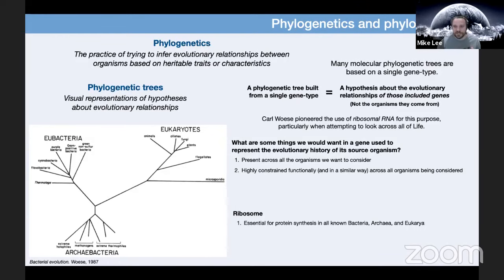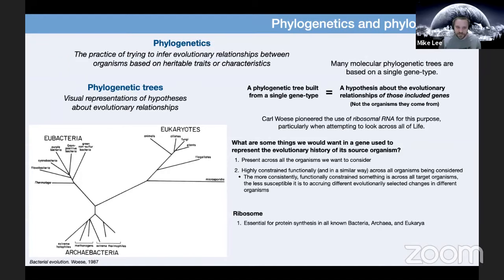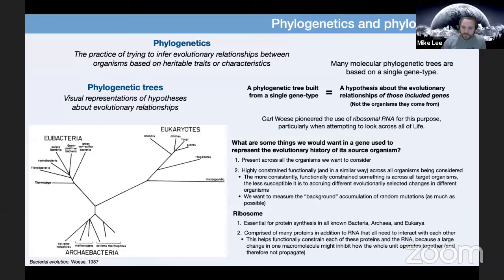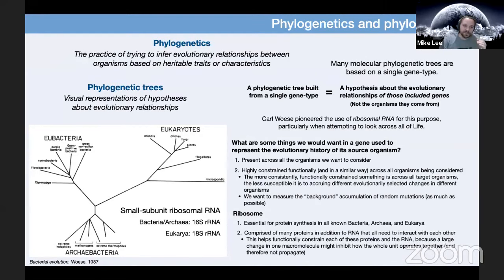Another important property is that the gene be highly constrained functionally in a similar way across all organisms we're looking at. The more consistently and functionally constrained something is, the less susceptible it is to evolutionarily selected changes in different organisms. We ideally want to measure the background accumulation of random mutations. The ribosome is comprised of many proteins in addition to RNA, and all these things need to interact in specific ways, which helps functionally constrain each protein and the RNA, since a large change in one might impair the whole unit.